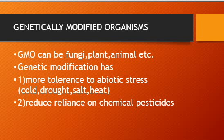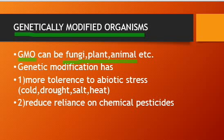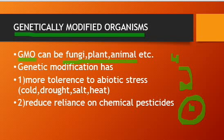When we manipulate the genetic system, we can produce different kinds of beneficial products. Genetically modified organisms can be fungi, plants, animals, or even bacteria. Whenever we insert some extra gene of interest into a host cell, it becomes a genetically modified organism because its genetic material is now changed — we have added a new gene to it.